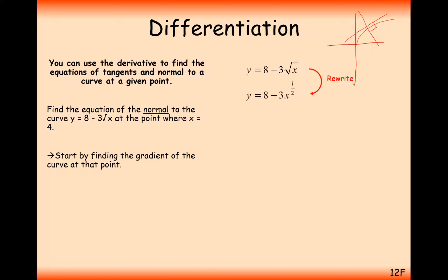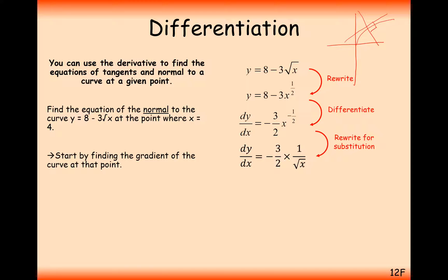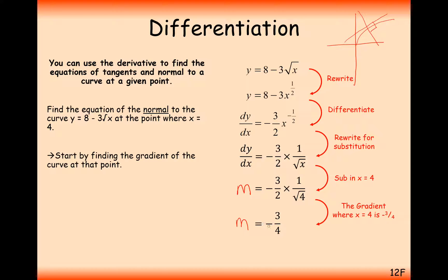The first thing to do is rewrite this as an indice and then differentiate. The 8 is going to disappear because it's just a number. Then it's a half times minus 3, so minus 3 over 2, and x to the minus 1 half. Now we work out the gradient for x equals 4: m equals minus 3 over 2 times 1 over the square root of 4, which simplifies to give us minus 3 over 4.